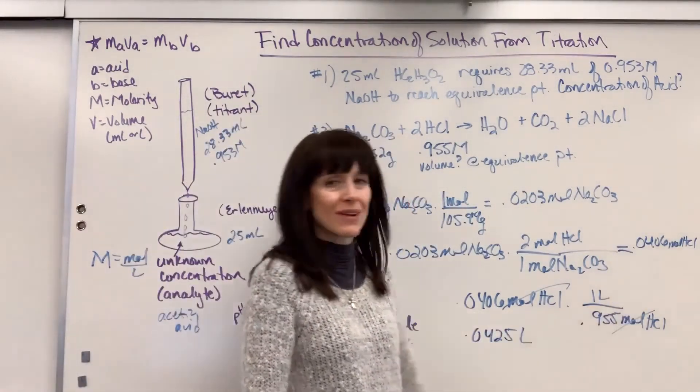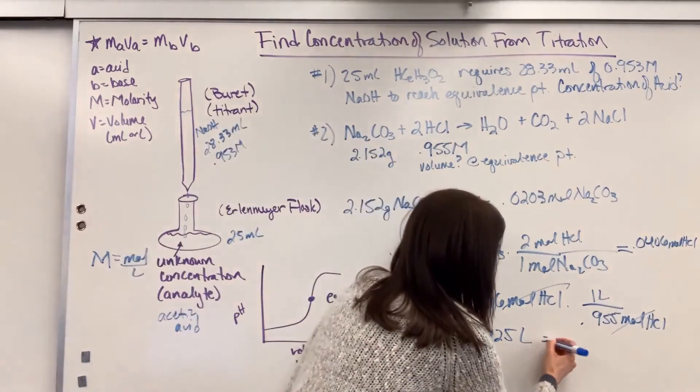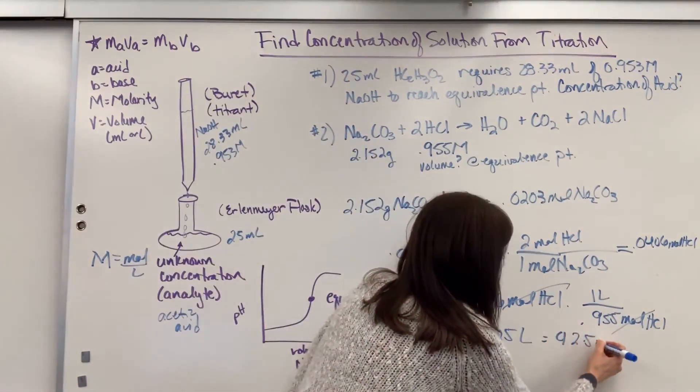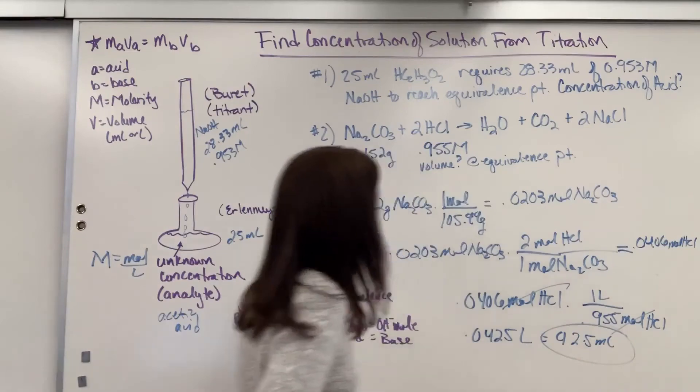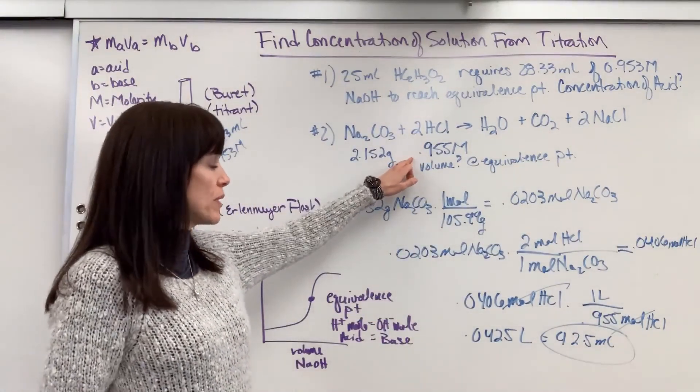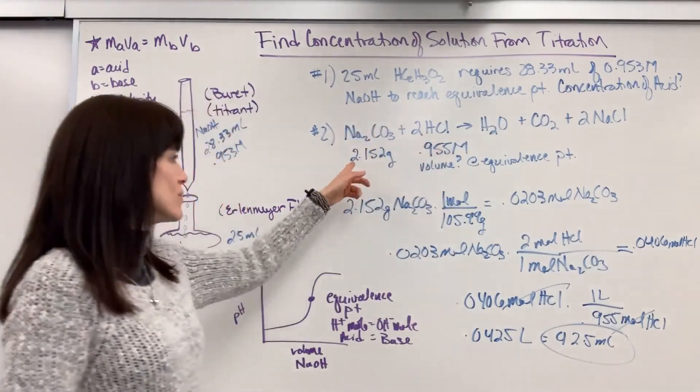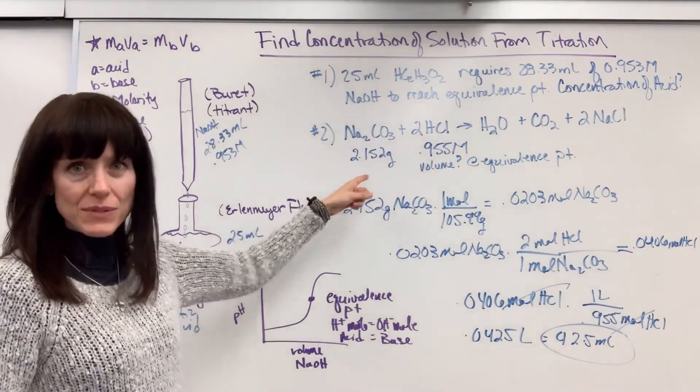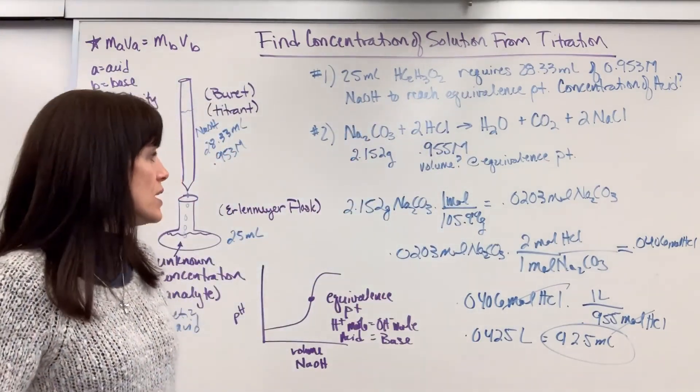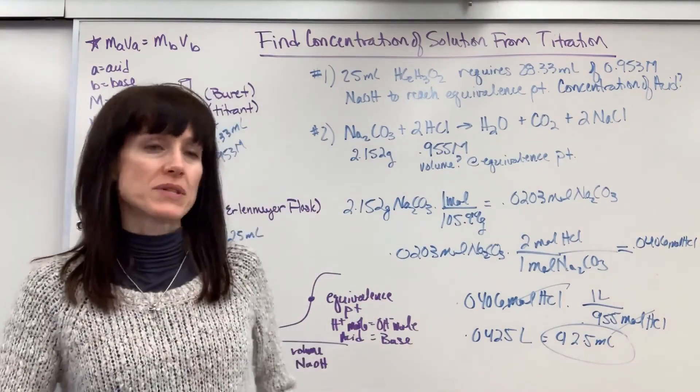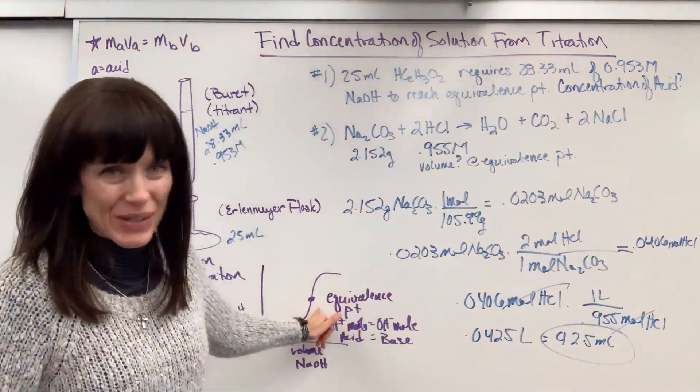We end with liters right there. Multiply that by 1,000 and it's 42.5 milliliters. So we would have to pour 42.5 milliliters of a 0.955 molar HCl onto the 2.152 grams. And there you have it. It will completely 100% react. It will be the equivalence point.